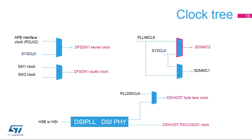Several peripherals available only on some F7 device part numbers, such as the DFS-DM1 interface, the SDMMC2 interface, and the DSI-Host interface, have dedicated input clock sources. The clocks are derived from PLL outputs or from system clocks. In addition to PLL outputs, the DSI-Host interface clock can be generated from its own PLL.